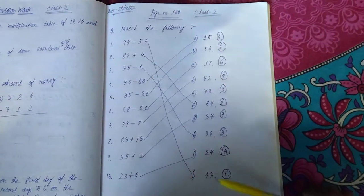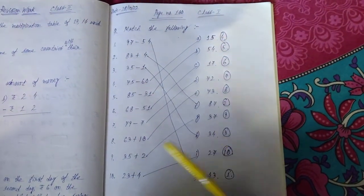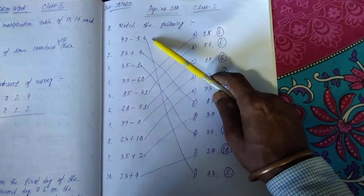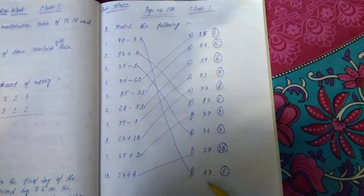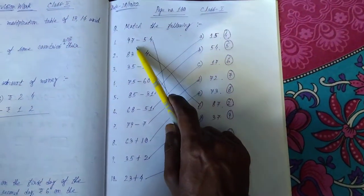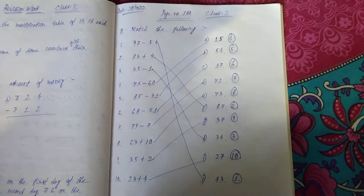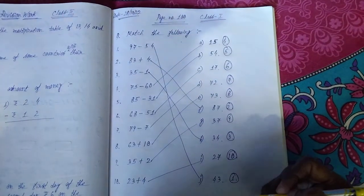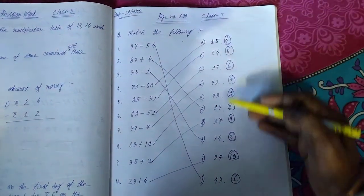Then only you can match the numbers with their answers. Suppose 97 minus 54, the answer is 43. You will have to subtract both numbers. You need to check it first. After getting the answer, you will have to look for the answers from the options given here, then you will match with the numbers.